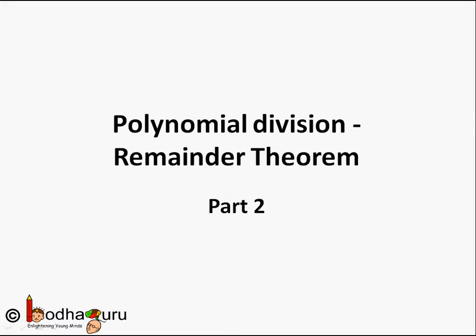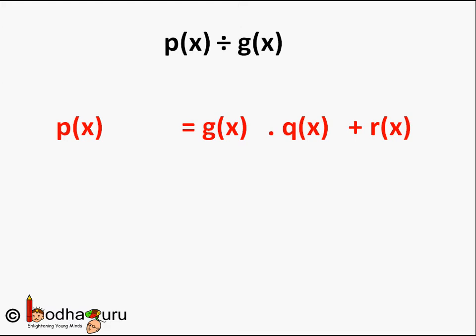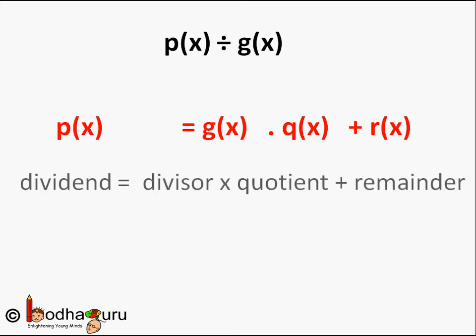Hello friends. In this lesson we shall learn more about performing division operation on polynomials. In the last lesson we learned: if p(x) is a polynomial of degree greater than or equal to 1 and we divide it by another polynomial g(x), then p(x) = g(x)·q(x) + r(x), where p(x) is the dividend polynomial, g(x) is the divisor polynomial, q(x) is the quotient, and r(x) is the remainder.